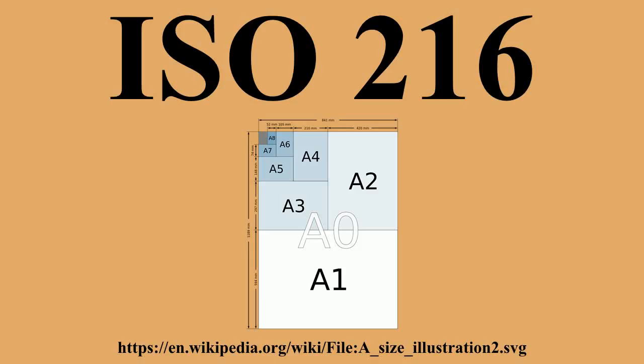Rectangular sheets of paper with the ratio 1:√2 are popular in paper folding, such as origami, where they are sometimes called A4 rectangles or silver rectangles. In other contexts, the term silver rectangle can also refer to a rectangle in the proportion 1:√2, known as the silver ratio.